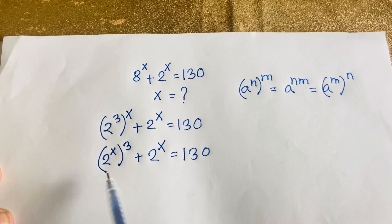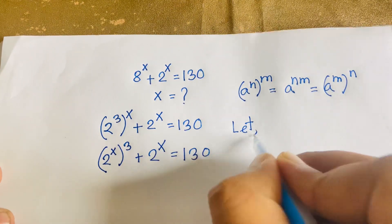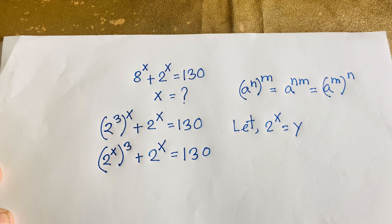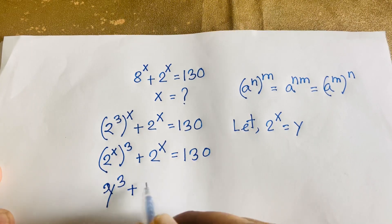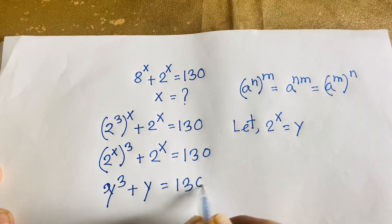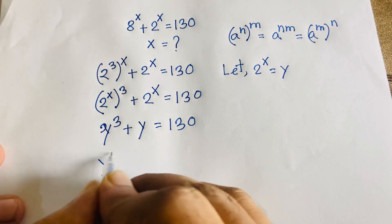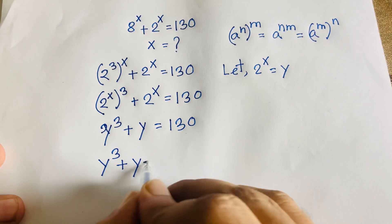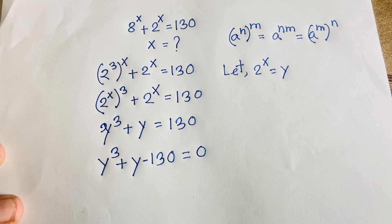Now I notice we have 2 to the power x appearing in both terms. Let's substitute: let y equal 2 to the power x. Then 2 to the power 3x is y cubed, so the equation becomes y cubed plus y equals 130, or y cubed plus y minus 130 equals 0. This is a cubic equation.